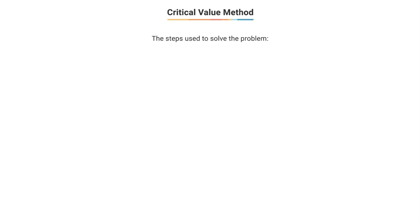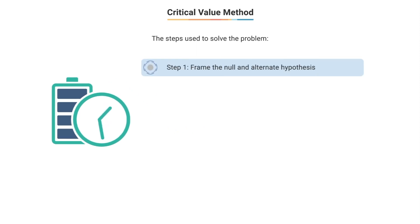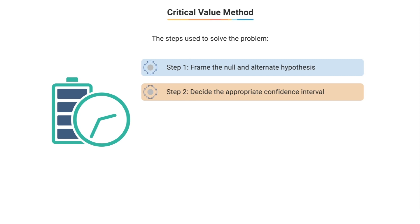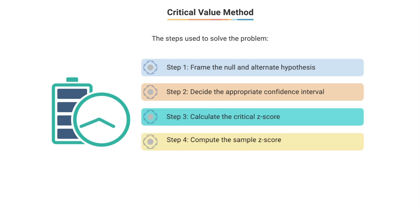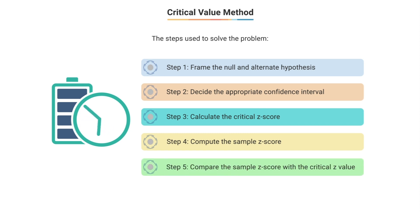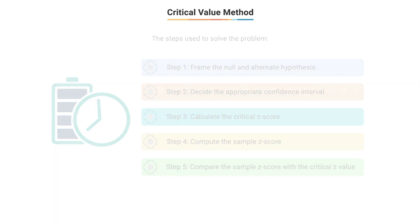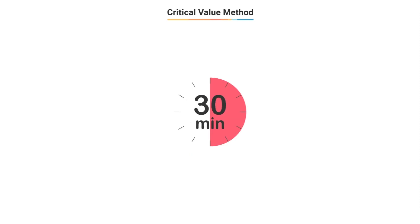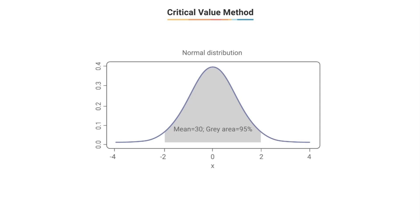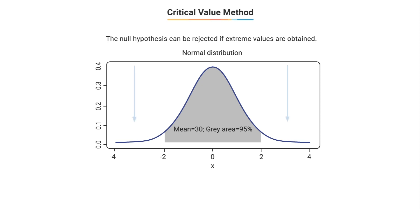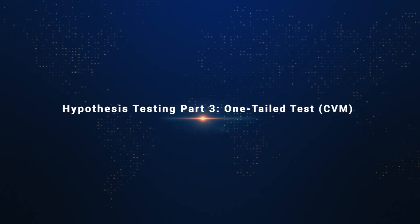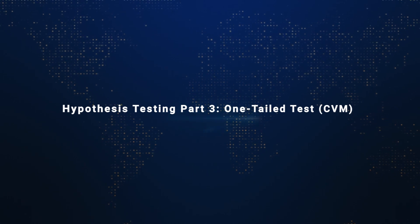Let's quickly recap all the steps used. Step 1: frame the null and alternate hypothesis. Step 2: decide the confidence level. Step 3: determine the critical z-score. Step 4: compute the sample z-score (z-statistic). Step 5: reach a decision and interpret the result. In our case, we tested for deviation from the hypothesized mean of 30 minutes on both sides of the sample mean distribution, so the rejection region lies on both sides of the mean. This type of test is called a two-tailed test, as the null hypothesis can be rejected on obtaining extreme values on either side of the curve.